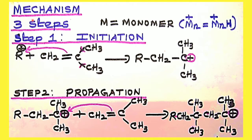In the cationic addition polymerization reaction, this mechanism involves three steps. There is an initiation step, a propagation step, and termination. The cationic species attacks the π electron-rich unsaturated alkenes possessing an electron-releasing group. Alkenes with an electron-releasing substituent will undergo cationic addition polymerization.